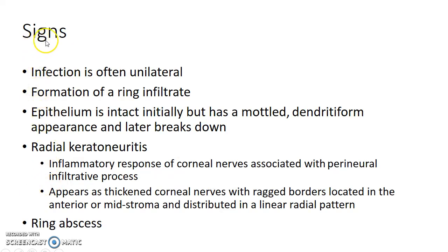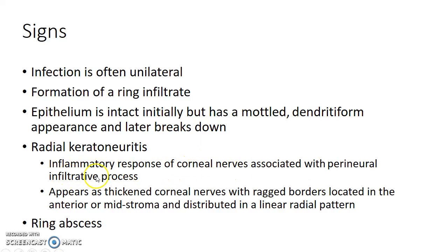Now let us see about the signs of Acanthamoeba keratitis. Infection is often unilateral. A ring infiltrate will usually be seen. The epithelium is intact initially but has a dendritiform appearance, and later the epithelium breaks down. Radial keratoneuritis is an early pathognomonic feature of Acanthamoeba keratitis. It is an inflammatory response of corneal nerves associated with a perineural infiltrative process, appearing as thickened corneal nerves with ragged borders located in the anterior or mid stroma and distributed in a linear radial pattern.